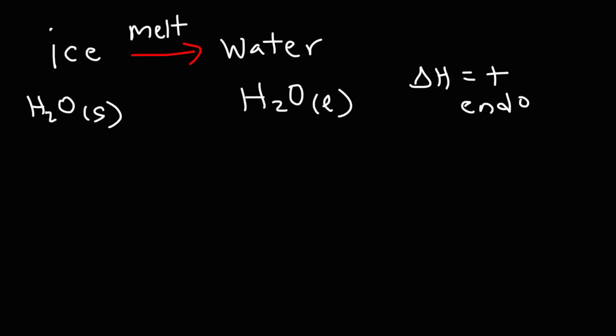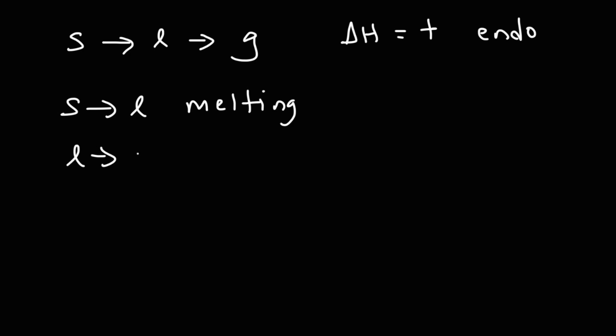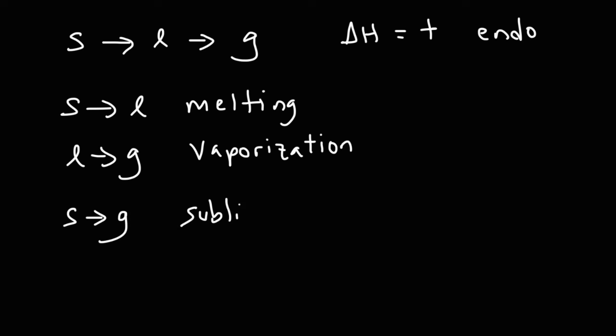Let's go over the enthalpy changes of all the phase changes. Going from a solid to a liquid to a gas is an endothermic process — you need to add energy. Going from a solid to a liquid is known as melting, which is endothermic. Going from a liquid to a gas is vaporization, also endothermic — if you put liquid water in a pot and increase the temperature, the water boils and vaporizes into steam. Going directly from a solid to a gas is sublimation, also endothermic. A good example is dry ice, which is solid carbon dioxide — with a little heat, it easily goes into the gaseous state.